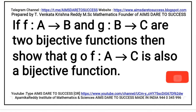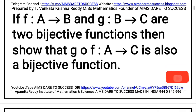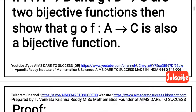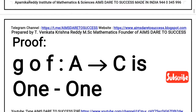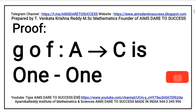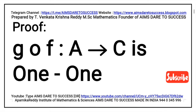So first you can divide the proof into two parts. First part: one-one function. Next part: onto function. Individually, two functions — F mapping from A to B and G mapping from B to C — are two bijective functions as given. Now I am going to explain the proof.